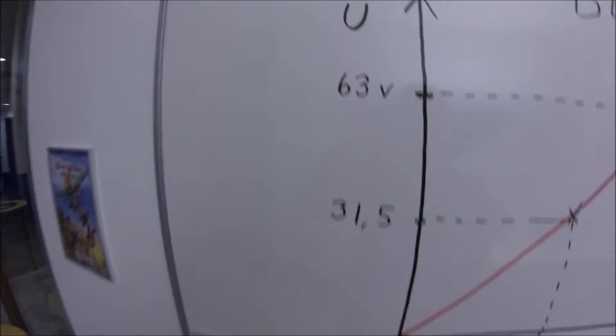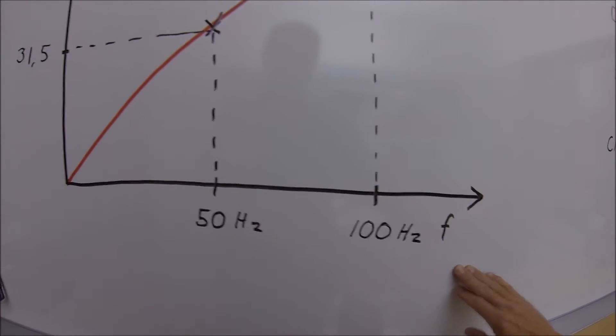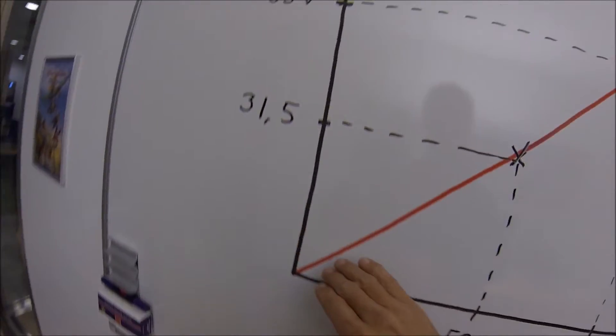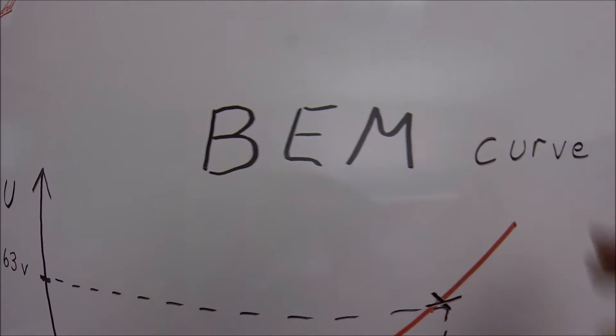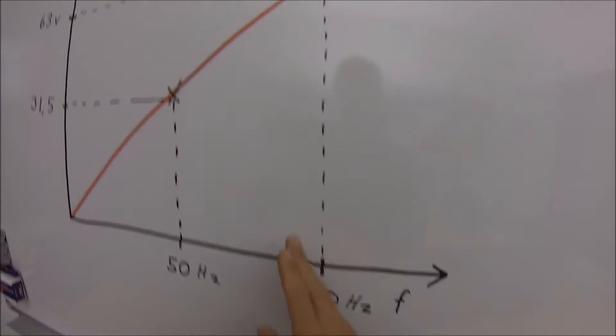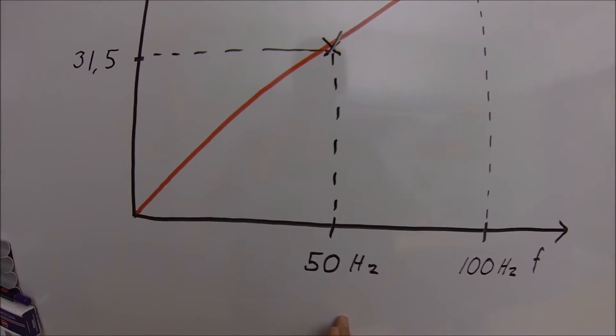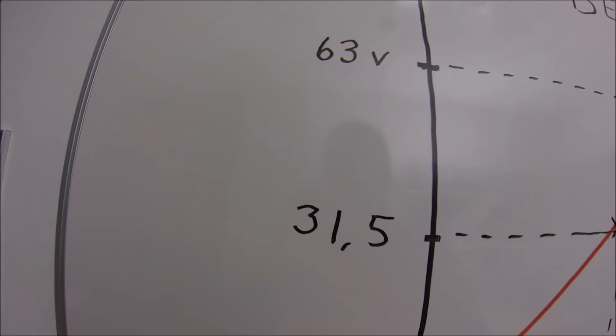The relation between the voltage on the output and the rotation speed of the shaft and then also the frequency is a constant relation called the back EMF curve. At 100 hertz this specific generator produces 63 volts. Half the speed, 50 hertz, it produces also the half voltage.